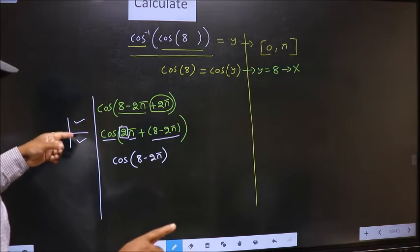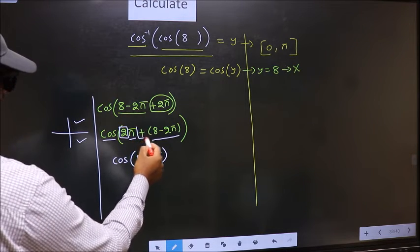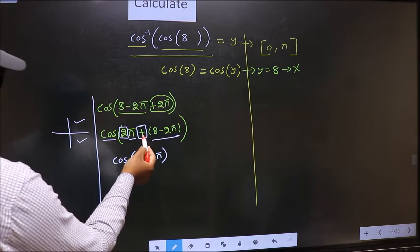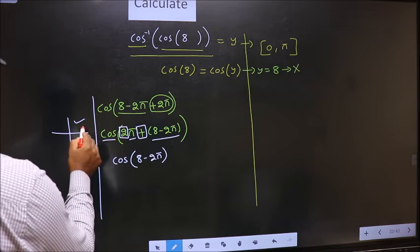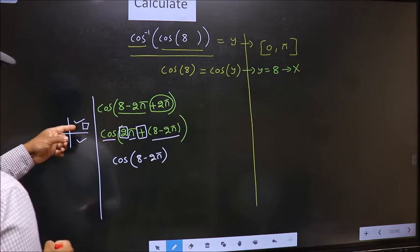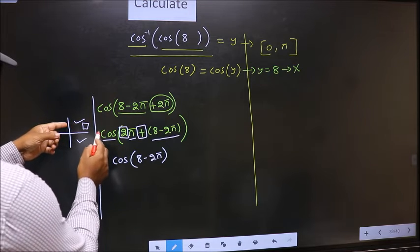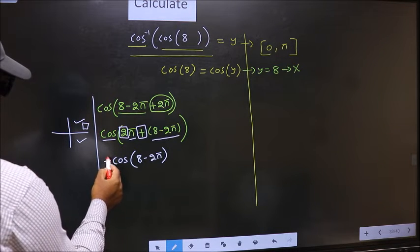So now to select the quadrant, we should look at this symbol. Here we have plus. That means angle lies in the first quadrant. And in the first quadrant, cos is positive. So put plus.